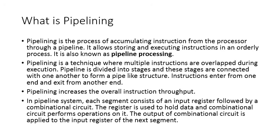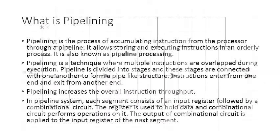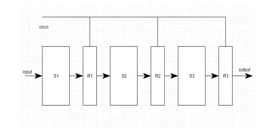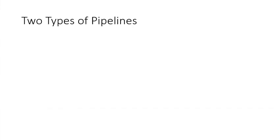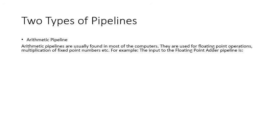In the pipeline system, each segment consists of an input register and a combinational circuit. The register is used to hold data, and the combinational circuit performs operations on it. The output of the combinational circuit is applied to the input register of the next segment. Here's a diagram: the input goes to segment 1, then register 1, segment 2, register 2, segment 3, register 3, and then you have an output. There are two types of pipelines: the arithmetic pipeline and the instruction pipeline. The arithmetic pipeline deals with logical values and is used for floating point operations, multiplication of numbers, etc.